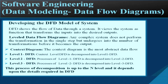A leveled DFD is used for complex systems. The context diagram is the most abstract data flow representation and is created first. Next, level 1 DFD is created by decomposing the context level DFD into sub-processes. Level 2 DFD further decomposes level 1 processes into sub-processes, and level 3 DFD decomposes level 2 processes further into smaller sub-processes. This decomposition continues up to n-levels depending on the detail required.